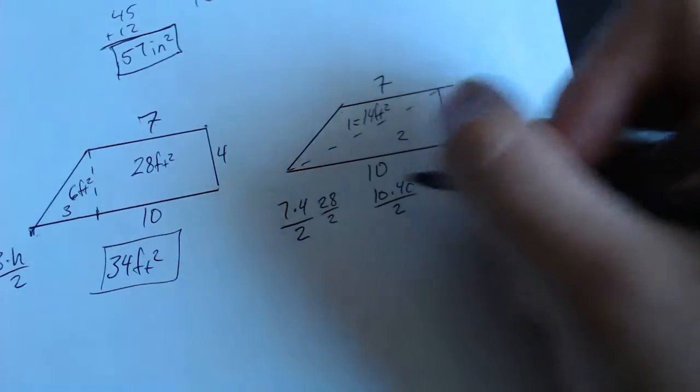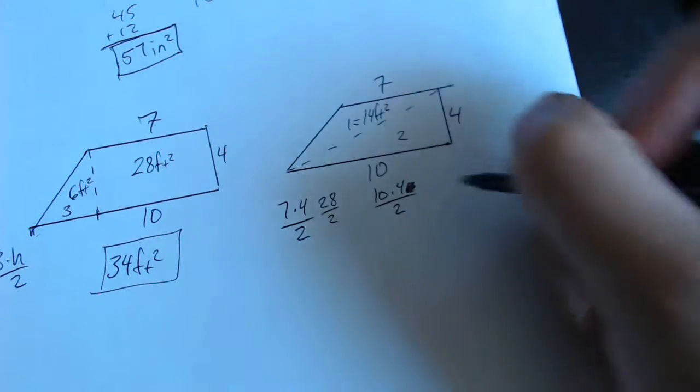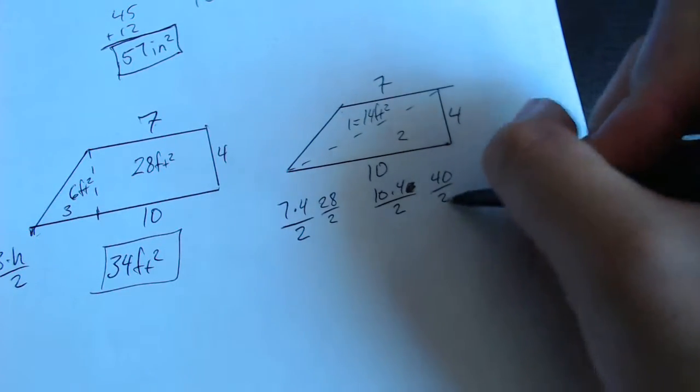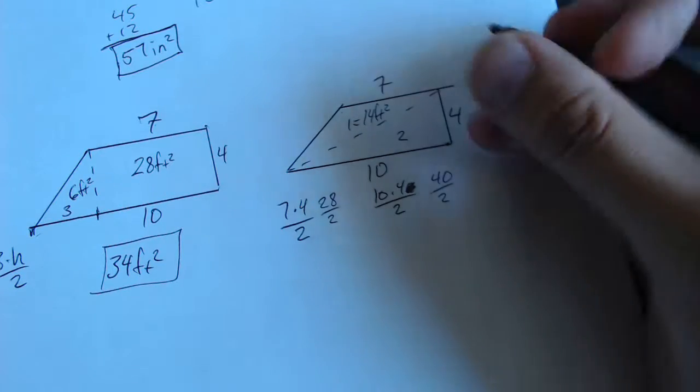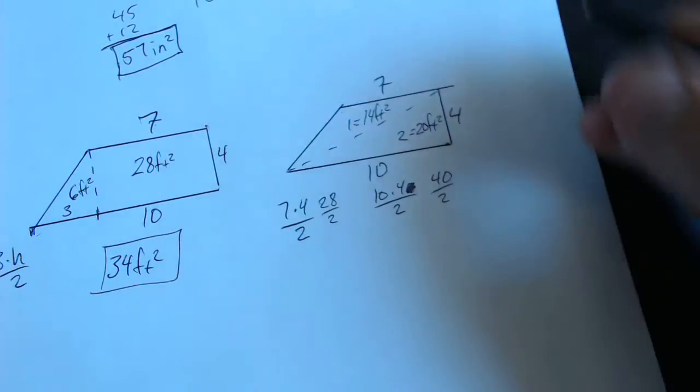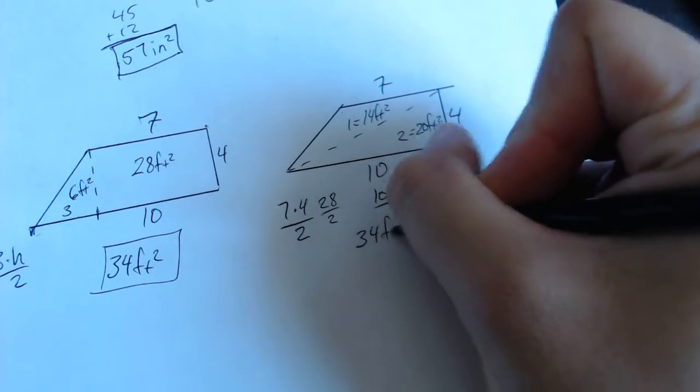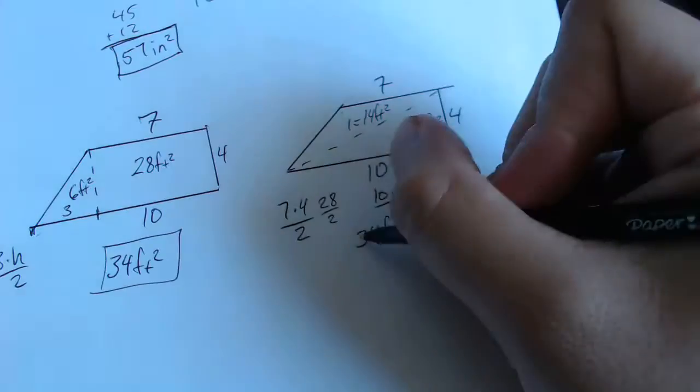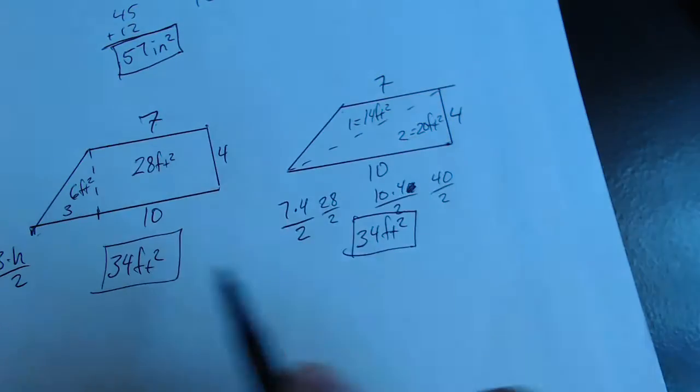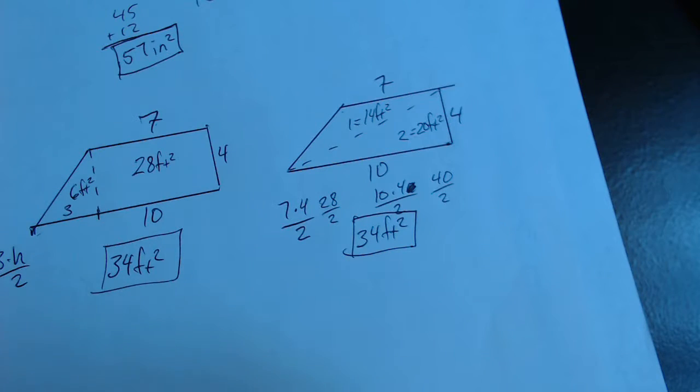This next one, we get 10 times 4, which gives us 40 over 2, which means that that is going to be 20. So triangle 2 is 20 feet squared. We add 14 and 20, and we get 34 feet squared. So you get the same answer either way. You just need to cut it into shapes you know, find the area of those shapes, and add them together.